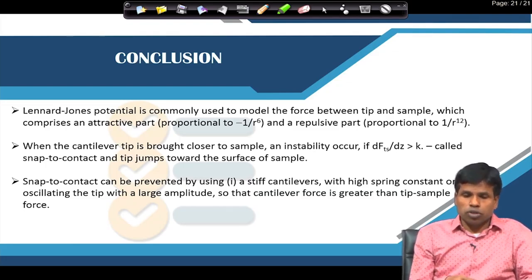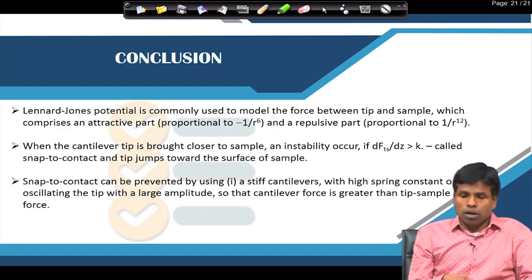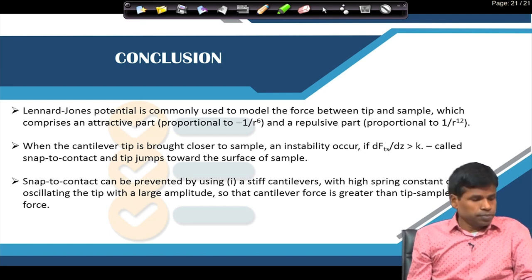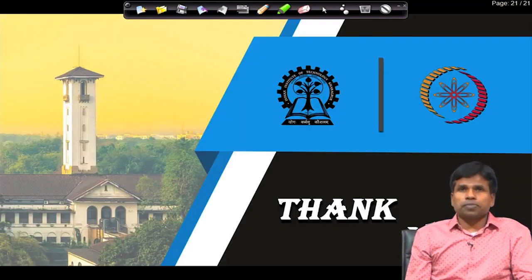In summary, the Lennard-Jones potential is used to model the force between tip and sample, comprising an attractive part and a repulsive part. When the cantilever tip is brought closer to the sample, instability occurs, and if the force gradient is greater than the spring constant, snap-to-contact occurs and the tip jumps to and sticks to the sample surface. Snap-to-contact can be avoided by using a stiff cantilever with high spring constant, or by using a high-amplitude oscillating cantilever so that the cantilever force is always stronger than the attractive tip–sample force. Thank you.